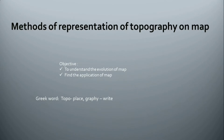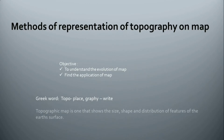First of all, you should know the meaning of the topic. Topography is a Greek word in which 'topo' means place and 'graphe' means write. A topographic map is one that shows the size, shape, and distribution of features of the Earth's surface. Whatever is present at a location — say a hill, a valley, or a flatland — has to be represented on a plain sheet of paper without any distortion to the size, shape, and distribution.